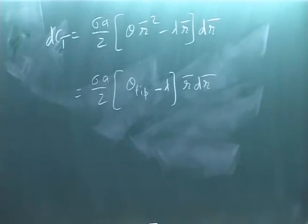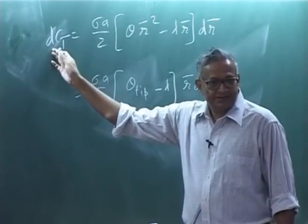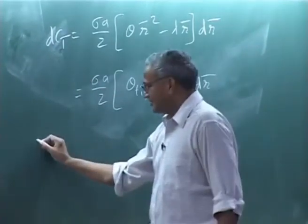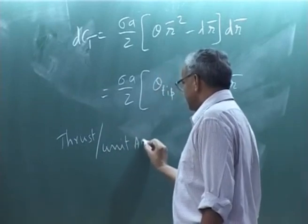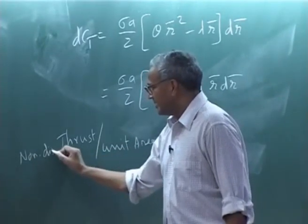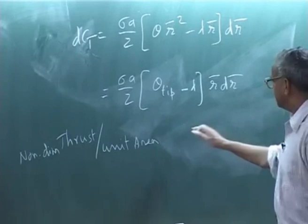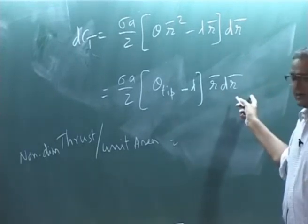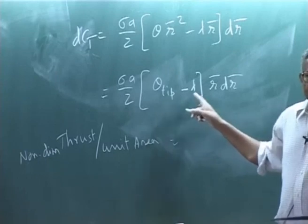Now, what is the area of the annular disc? Annular area is 2 pi r bar d r bar, that means I am saying lift per unit area or thrust per unit area. You can call it thrust per unit area. Area is non-dimensional. This is non-dimensional thrust. If I divide by 2 pi r bar d r bar, that means r bar d r bar will go off.